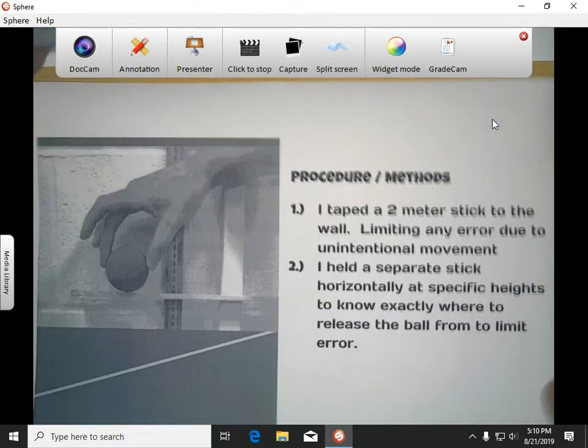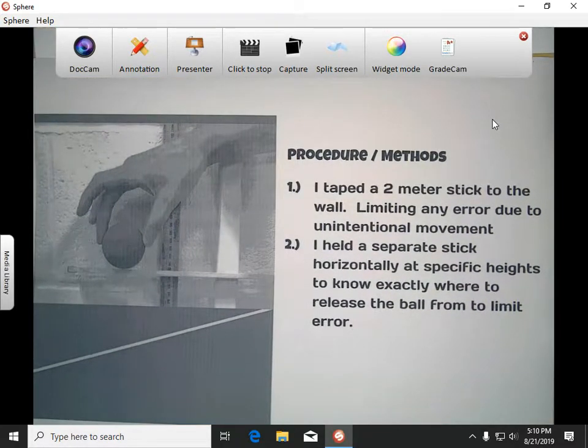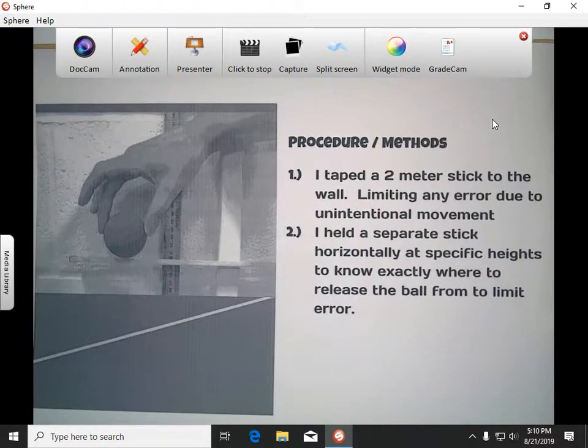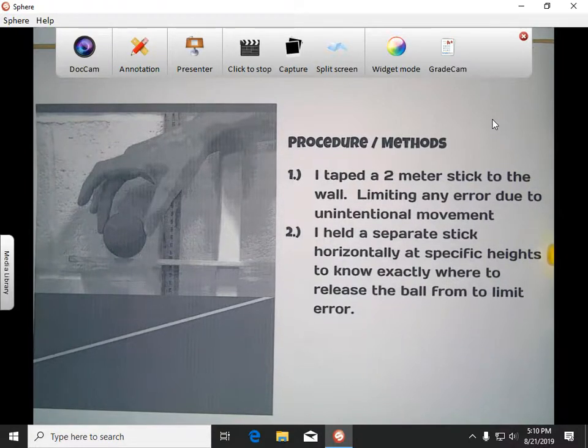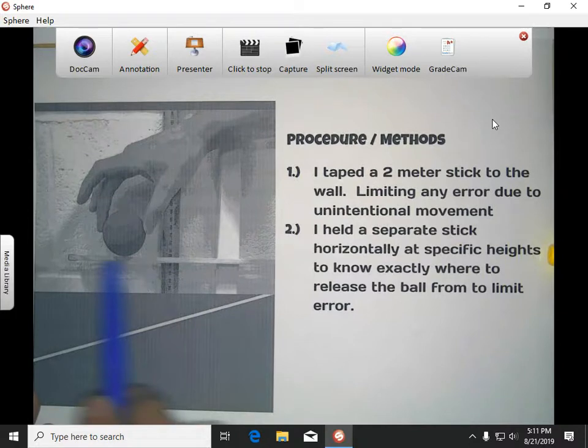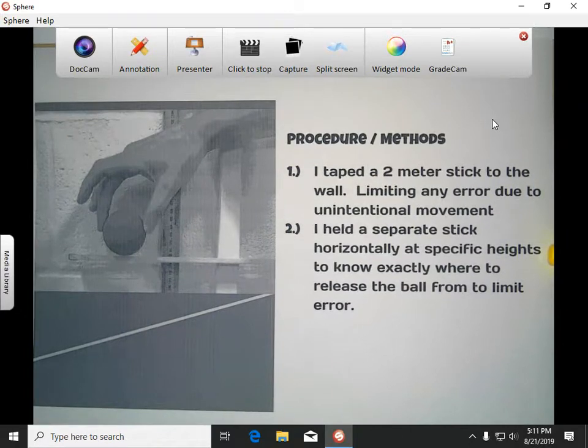In my procedure, what I did is I taped a two-meter stick to the wall. The reason I taped it was because that way the meter stick wouldn't move when I'm doing the measurements. I took another stick and I put that one horizontally at specific heights. That second meter stick helped me to know exactly where to release the ball from so that I would be consistent. Being consistent is super important.